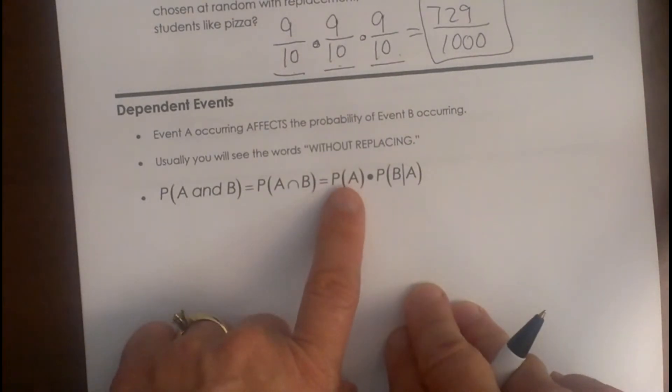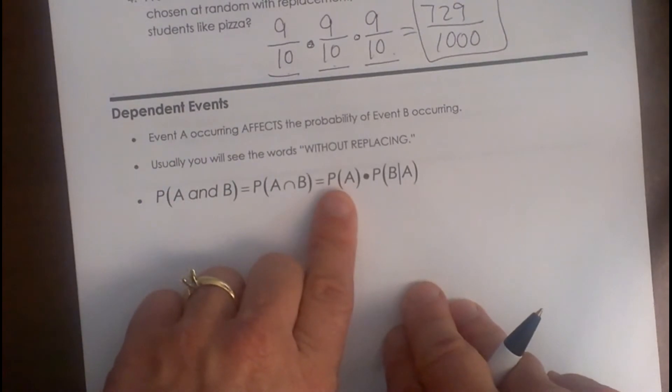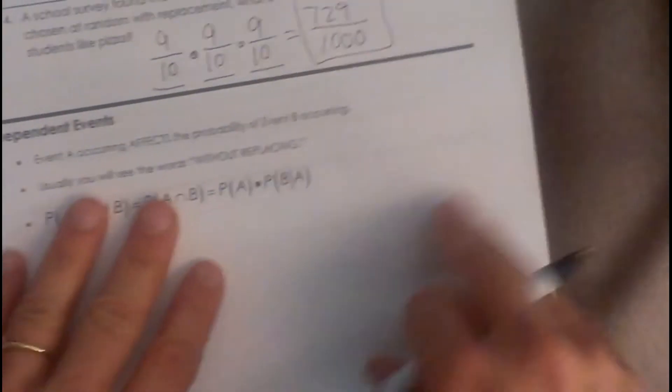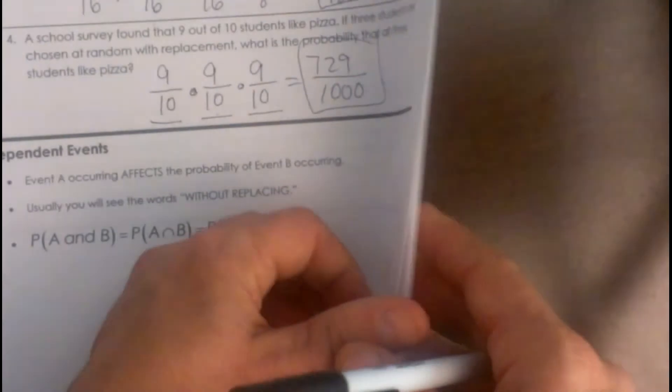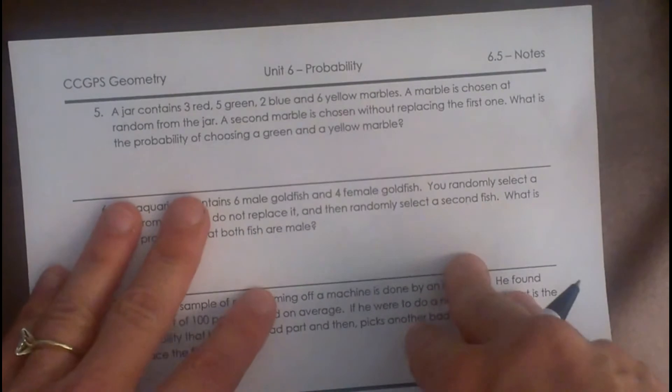So you take the probability of A and then you multiply it by the probability of B given A. So the first event is just normal, but the second event you have to take into account the fact that the first event occurred. Once you do a few of these they will make more sense.